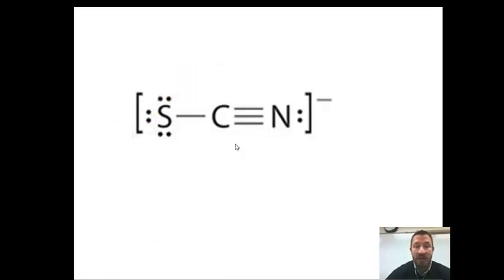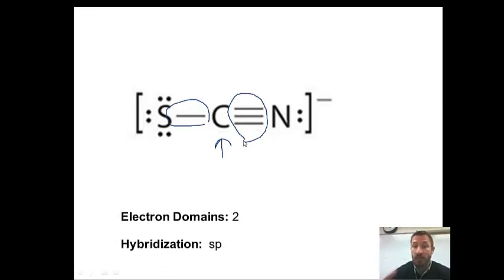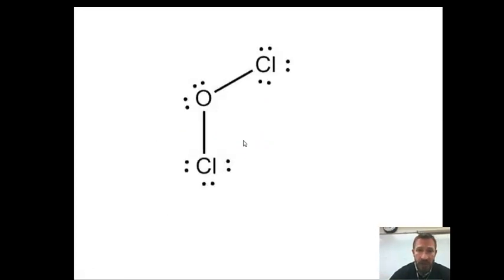Let's do another one. This is thiocyanate ion, polyatomic ion. We want to look at the electron domains around your central carbon. So you count the single bond as one. The triple bond counts as one. So you have two electron domains. And so with two electron domains, that will always be one S and one P. So SP hybridization and linear.